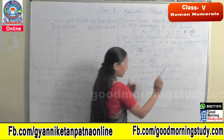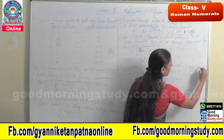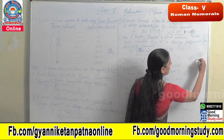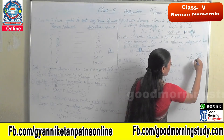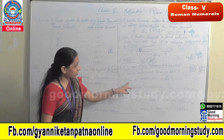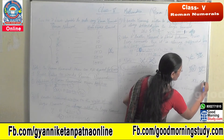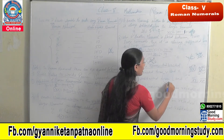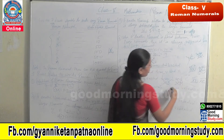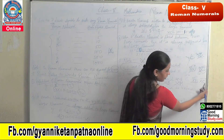Second caution: I can only be subtracted from V and X — so we can write IV and IX, but not IC or IM. Third caution: X can only be subtracted from L and C — so we can write XL and XC, but we cannot write XD or XM. X can only be placed to the left of L and C.